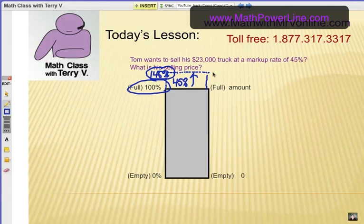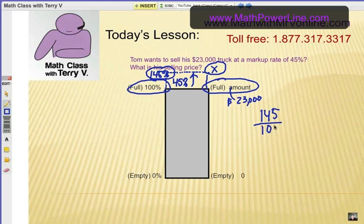To develop my proportion, I'm going to take a look at these four amounts. The full amount is $23,000. From my diagram, I can determine my proportion. So 145 over 100 equals x over 23,000, the original amount. The original 100% amount is always in the lower right.